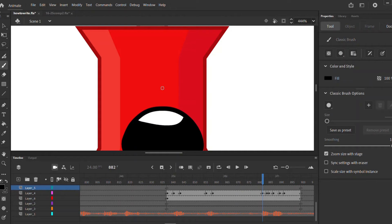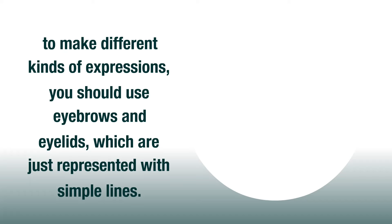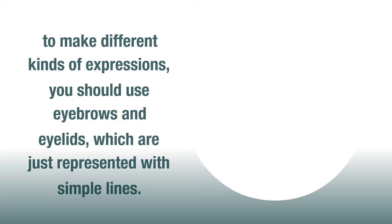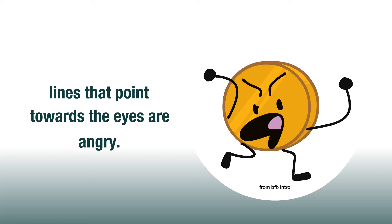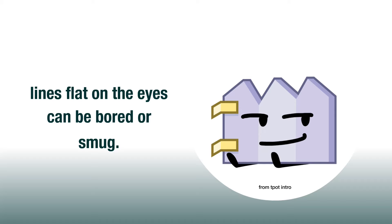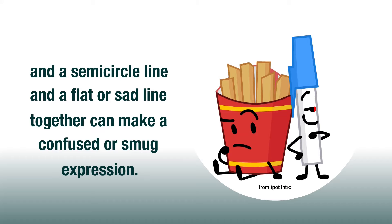Like in my last tutorial, which you should watch after this, eyes are just black ovals. You should make the eyes symbols so they can be tweened and duplicated to make different expressions. To make different kinds of expressions, you should use eyebrows and eyelids, which are just represented with simple lines. The BFDI faces only require at least one eyebrow. These eyebrows are shaped to show various expressions: lines pointing towards the eyes are angry, lines pointing away are sad or worried, lines flat on the eyes can be bored or smug, semi-circle shaped lines under the eyes make them look widened, semi-circled lines above the eyes can be seen as happy or surprised, and a semi-circled line with a flat or sad line together can make a confused or smug expression.